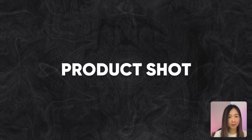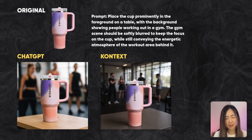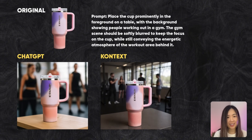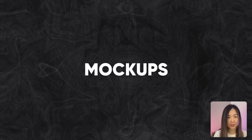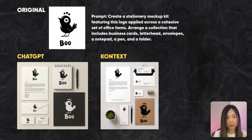We can also create product images by uploading a product as a reference image and writing a prompt to define the environment. Both models did a decent job with product accuracy — the icon on the cup was a little blurry due to the small size of the uploaded image, but the overall shape and branding were recognizable. We can also use these models to create logo mockups with a stationery kit. Both did a great job overall, with Context slightly altering the bird logo on smaller items.